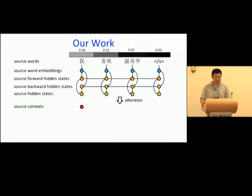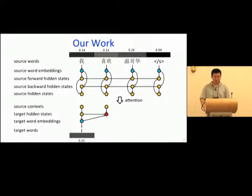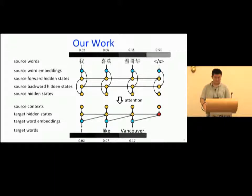Now it comes to the decoder calculating the source context. The source context for the first target word involves all neurons in the encoder and the first target hidden state of the first target word. For the second source context, note that the hidden state of the first target word participates in the calculation of attention. For the hidden state of the second target word, the first target word is also identified as a contextual node. Therefore, it is possible to investigate how source and target context influence the generation of target words. In this way, our approach is able to offer more insights on how MT works in the black box.